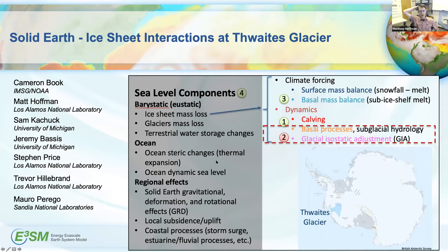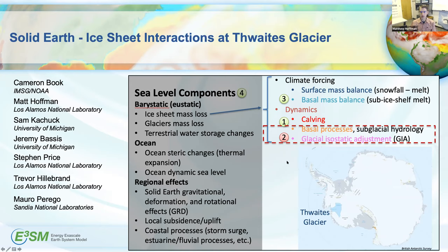The next section moves to Antarctica, specifically Thwaites Glacier, looking at solid earth–ice sheet interactions — focusing on glacial isostatic adjustment as a process recently added to our models, plus some results on basal processes at Thwaites. This work was done by student Cameron Book, now at NOAA, in collaboration with Sam Kachuck at the University of Michigan, who wrote the GIA model we're using.